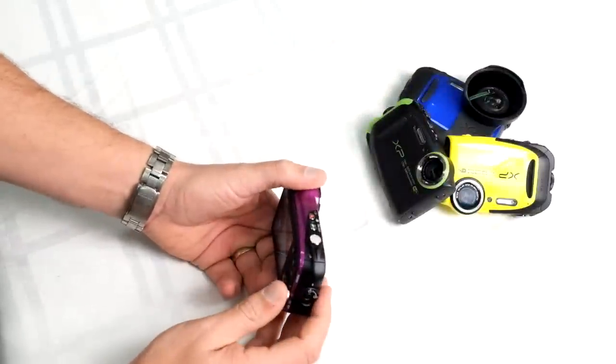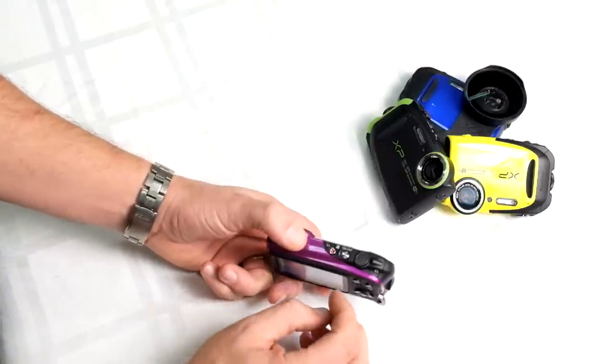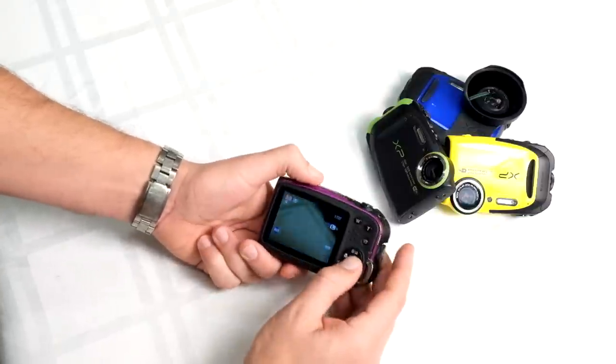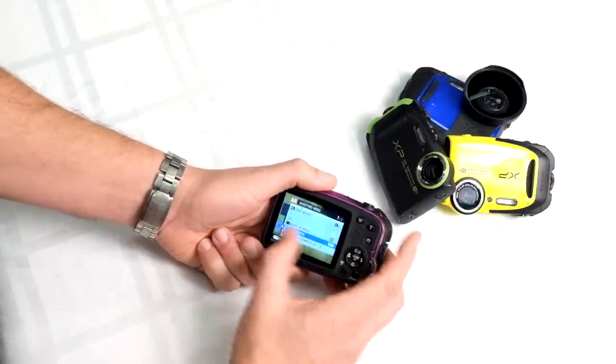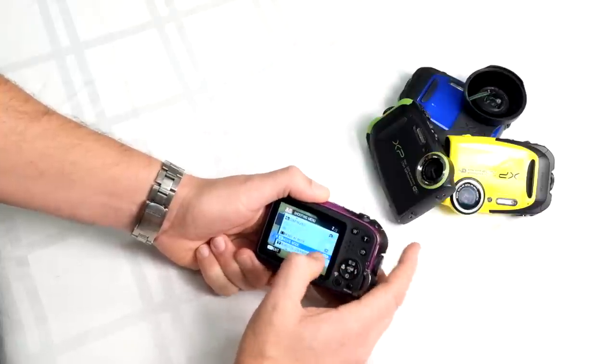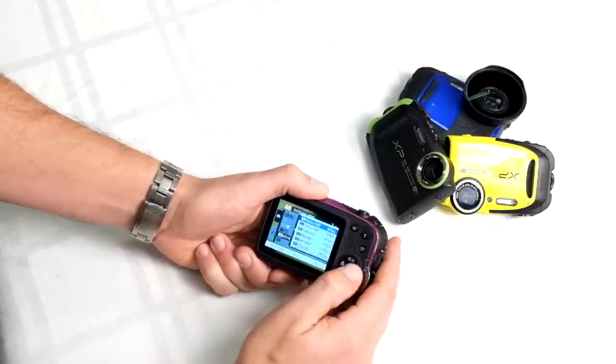The XP80 has full HD video with a one-touch video button that you can see here up at the top. Before we get into starting a video, we're going to take a look at the different movie modes we have. Under the menu, on the second page, you're going to see the movie mode. Hit to the right and here you'll see all your different options.